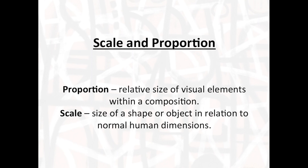Other techniques of two-dimensional composition are scale and proportion. Proportion is the relative size of visual elements within a composition — how they relate to each other and whether some are bigger or smaller. Scale is the size of a shape or object in relation to normal human dimensions.